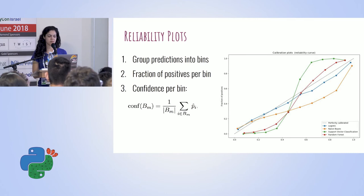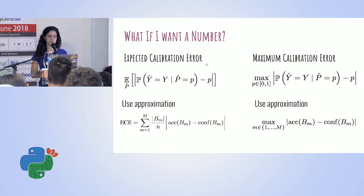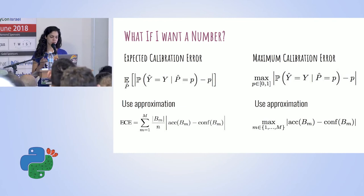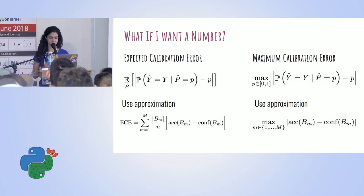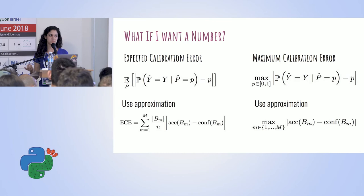If you want a single metric rather than a plot, you can use the Expected Calibration Error (ECE). We calculate the expected difference between accuracy per bin and confidence per bin, using a weighted average over bins. For high-risk applications, you might want to look at the Maximum Calibration Error (MCE) instead — which is exactly the same calculation but takes the maximum value across bins rather than the expectation.